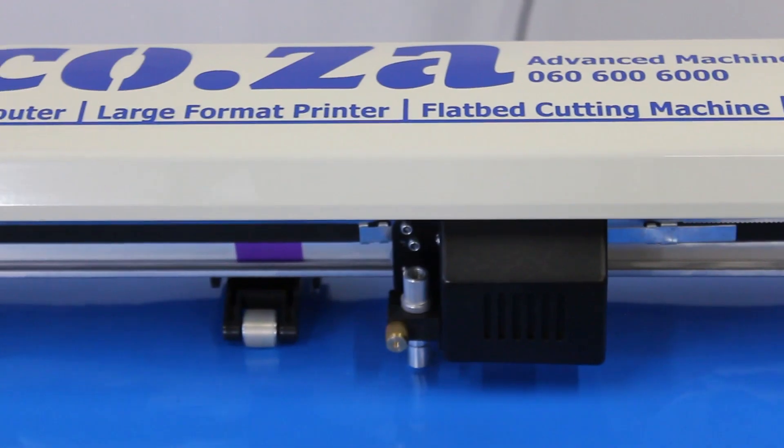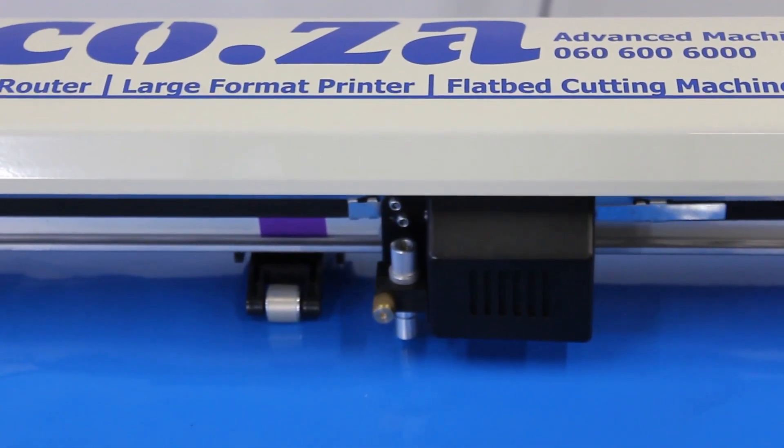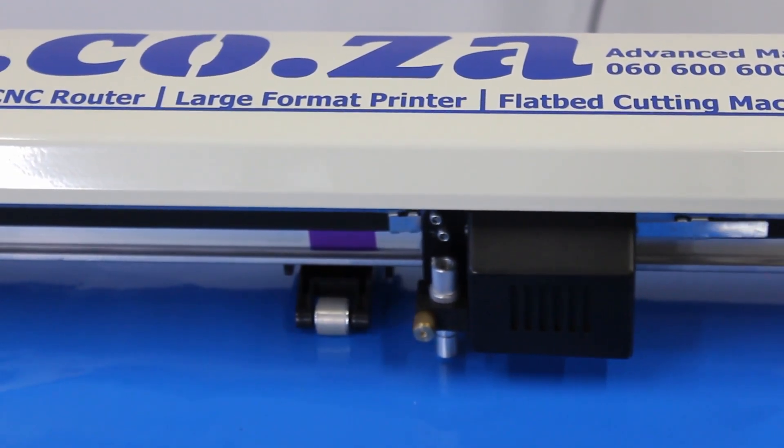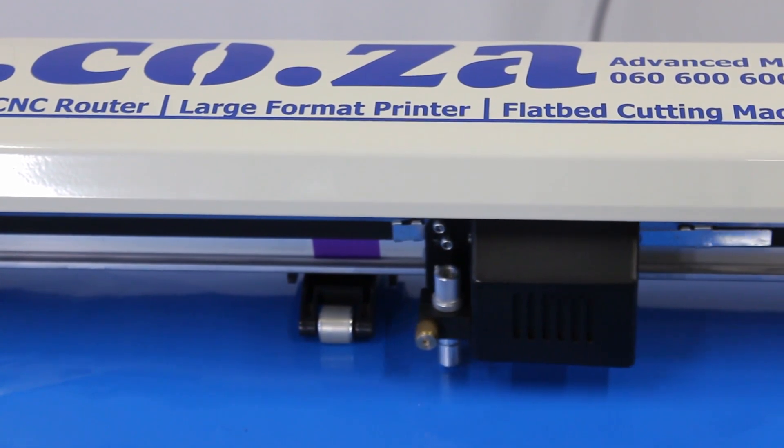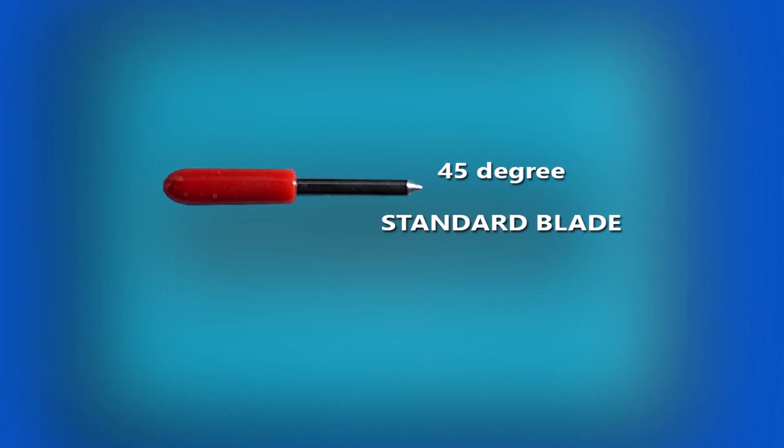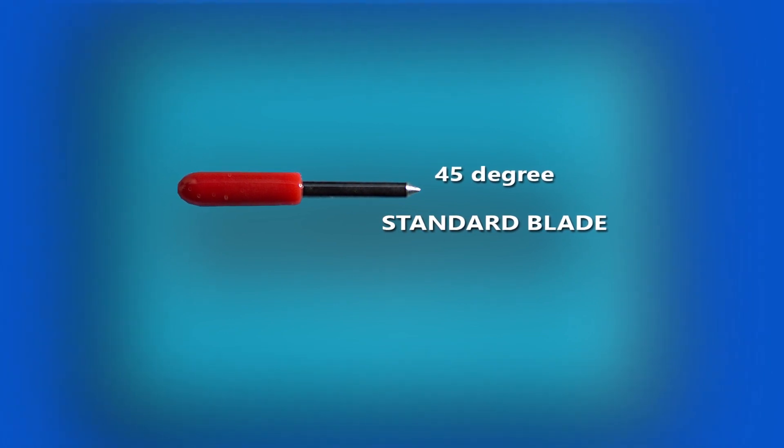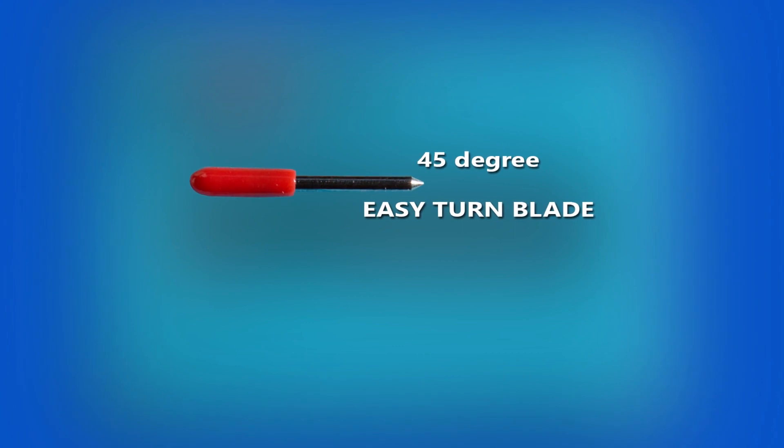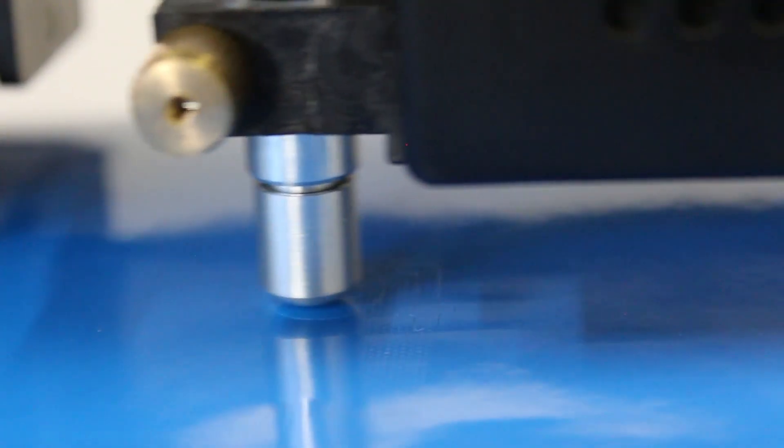At am.co.za we stock two types of 45-degree Roland-compatible blades: the standard blade for up to 1.5 millimeters thick material, and the easy turn blade with a smaller head with about 1 millimeter cutting thickness.